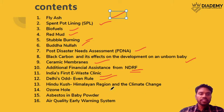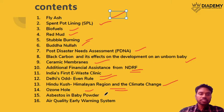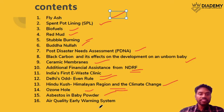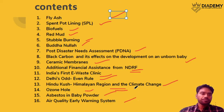We will look at the Himalayan region and its connection with climate change, the ozone layer, asbestos found in baby powder — recently in news because of the Johnson and Johnson case — and finally the air quality early warning system.